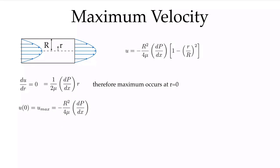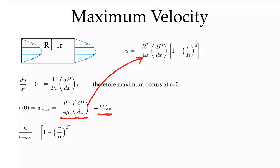We can compare the maximum velocity to the average velocity and see that it is 2 times the average velocity. Remember when we did this in module 3 for parallel plate flow — the pressure-driven flow between two parallel plates — because of the difference in geometry, we saw that the maximum velocity was 3/2 the average velocity, not 2 times. Because of the change to circular pipe geometry, the maximum velocity is 2 times the average velocity. We can substitute in this maximum velocity and write the velocity in non-dimensional form: u over u_max equals 1 minus (r/R)², clearly showing the parabolic profile for fully developed laminar flow.